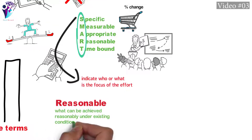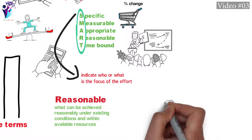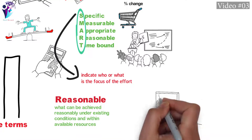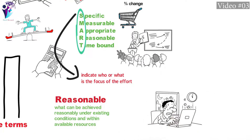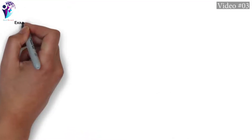Objectives should be realistic — deciding what can be achieved reasonably under existing conditions and within available resources. And lastly, they must be time-bound, stating clearly the time period for achieving the behavior changes.